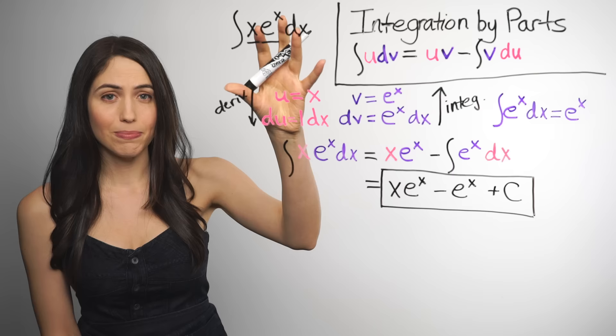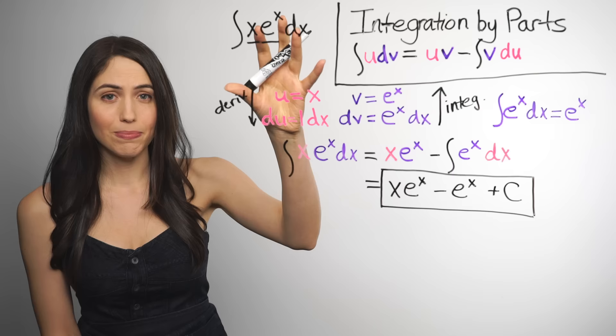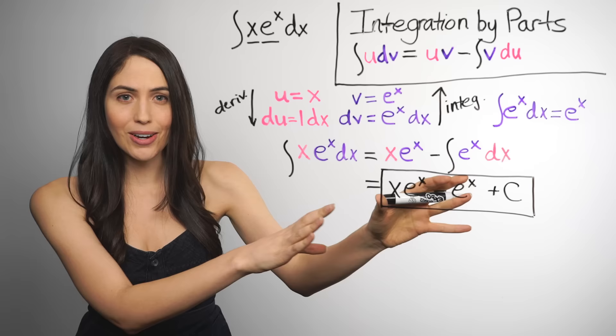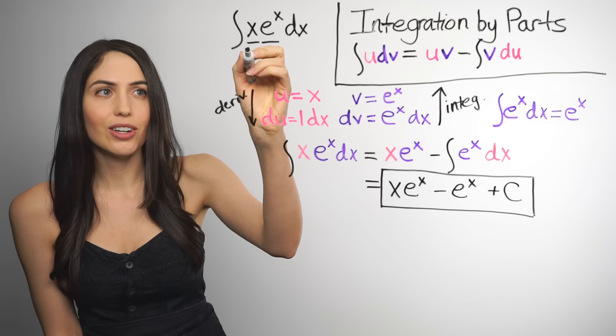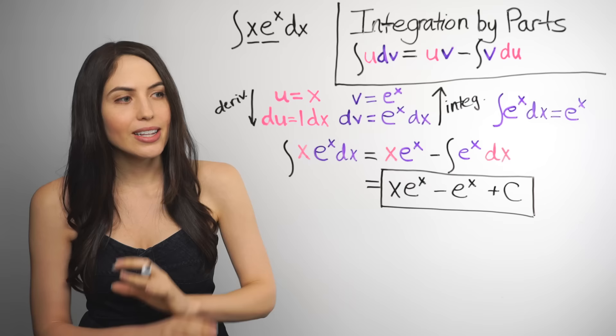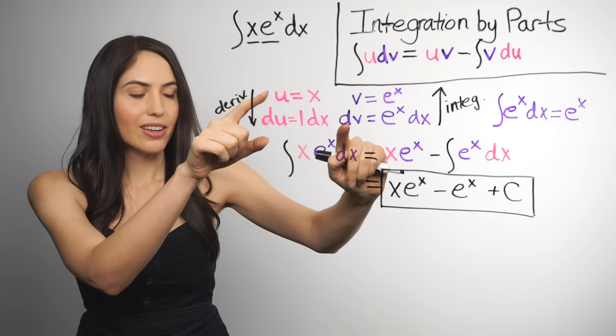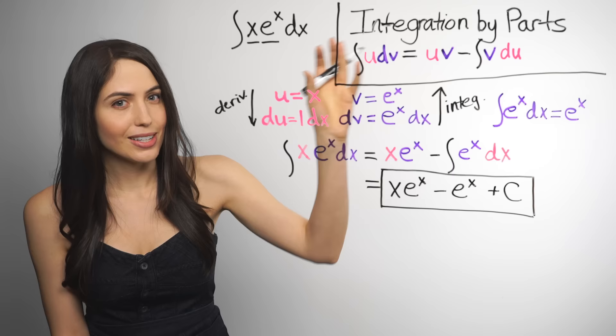So integration by parts made this solvable. Made it integrable. Like magic. And if you want, you can check this answer. You can take what you got, differentiate it, and you should get back your original integrand x e to the x. And you will. So in summary, all you need to do is pick u and dv, find du and v from them, and then use the formula.